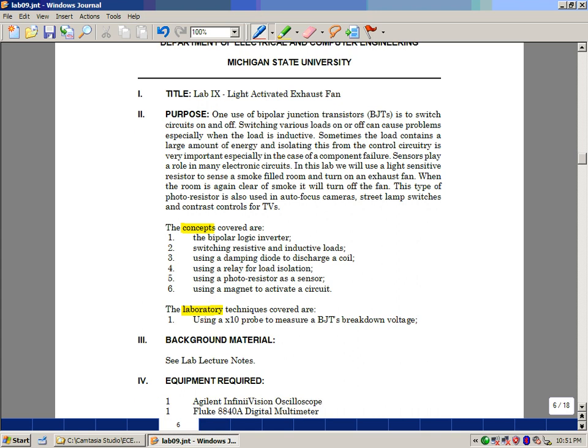The voltage that we're creating across the output with this switching transistor can get quite high. In fact, it can exceed the rating of the scope's front end. So using a times 10 probe allows us to step the voltage down by a factor of 10. This will protect the input of oscilloscope from damage. And this is lab number nine, a light-activated exhaust fan.